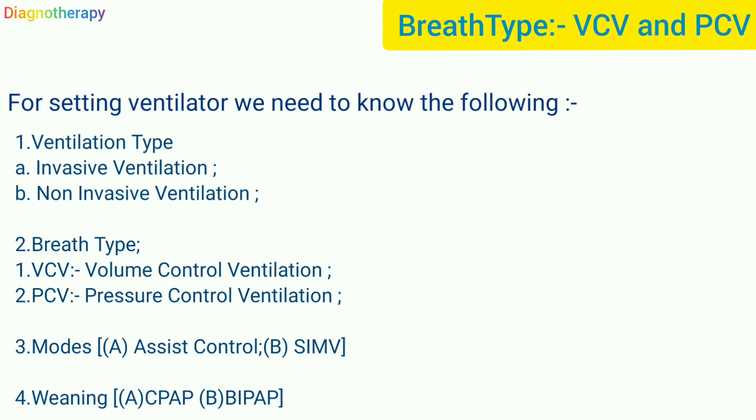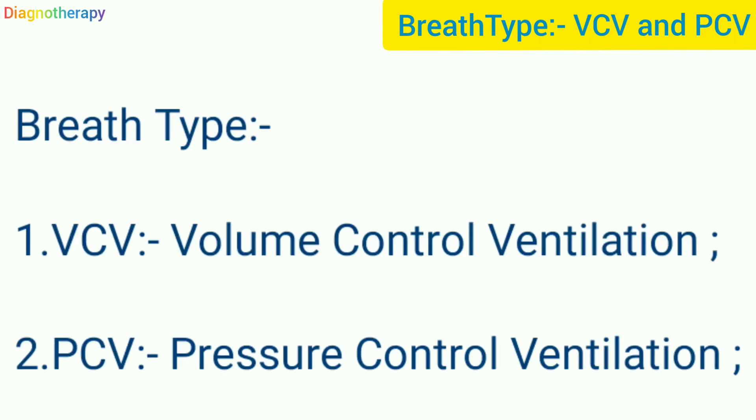Third, the modes, and fourth, the weaning. Ventilation type may be invasive or non-invasive. Breath type can be volume control ventilation or pressure control ventilation. In modes it may be assist control or SIMV — in assist control the patient is totally sedated, and in SIMV the patient takes some breaths on their own. In weaning, we support the patient to breathe independently, and if they find difficulty the ventilator will support them.